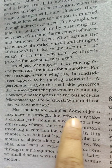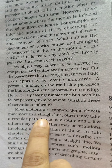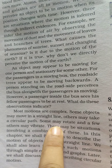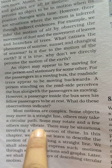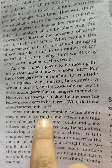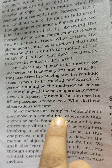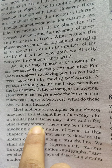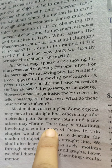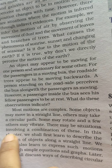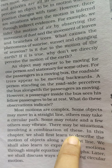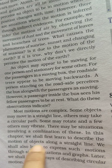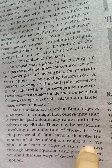Most motions are complex. Some objects may move in a straight line, others may take a circular path, some may rotate, and a few others may vibrate. There are different types of motion — straight line, circular path, rotation, and vibration. There may also be situations involving a combination of these.